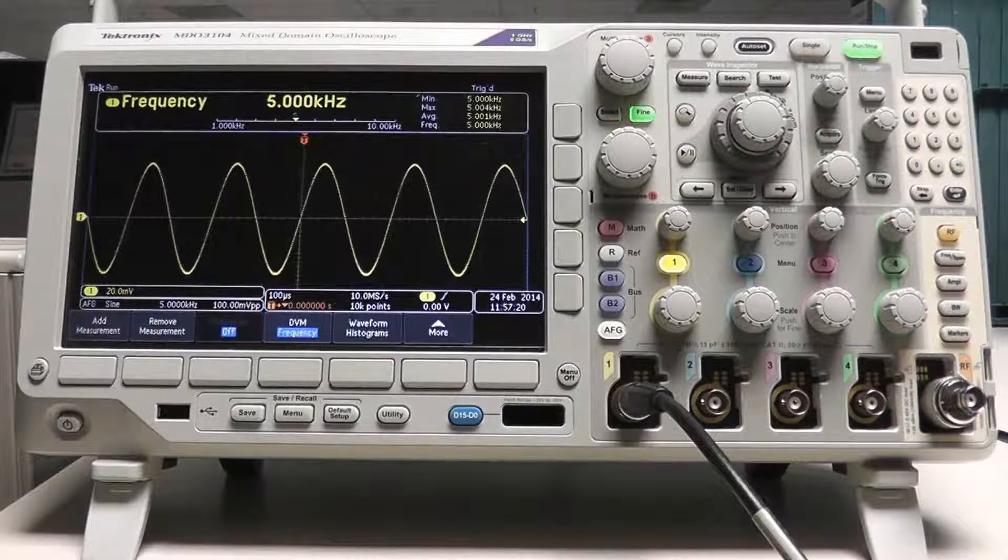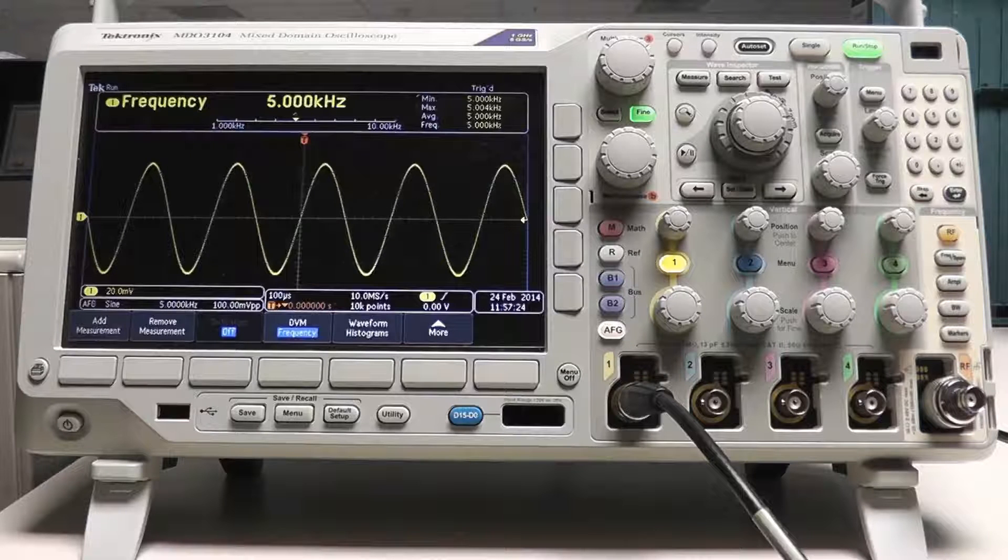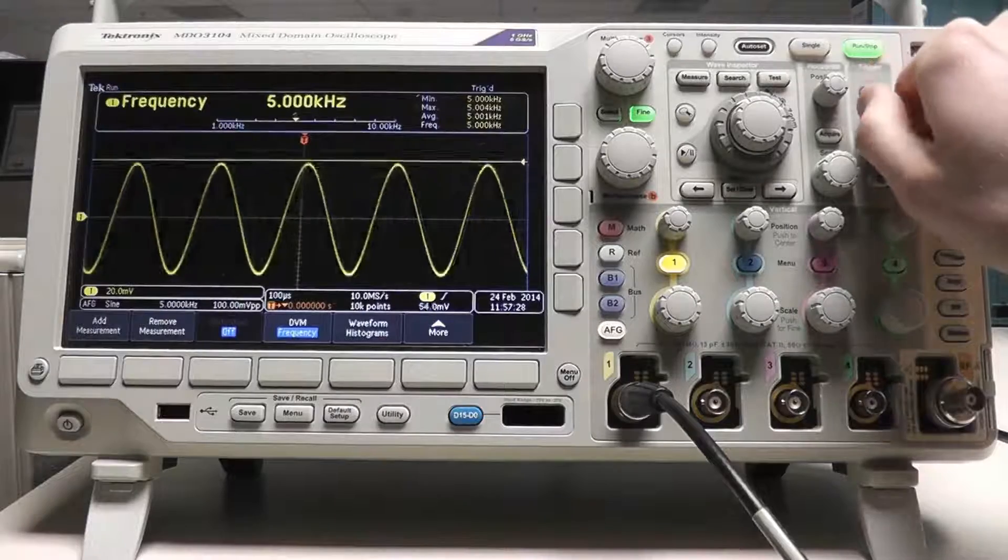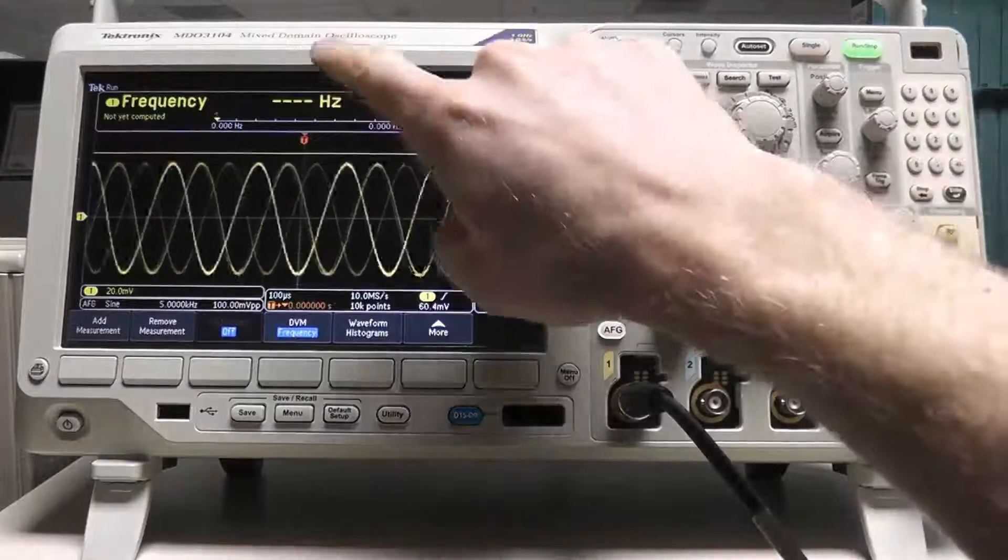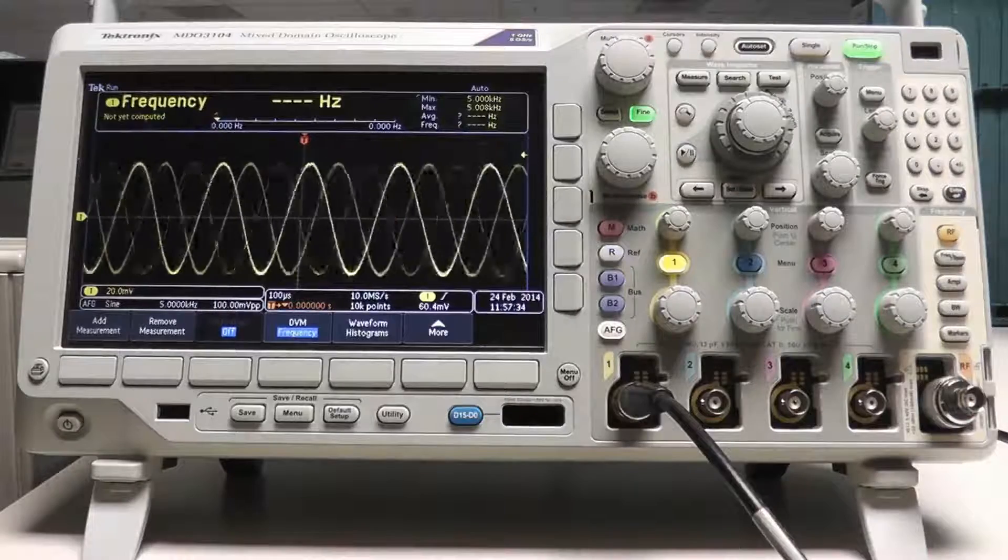The DVM and counter depend on the scope's triggering and scaling system to acquire an accurate measurement. For example, if you're measuring frequency and the trigger level is outside the waveform, the counter can't see the zero crossings and won't be able to calculate the frequency.